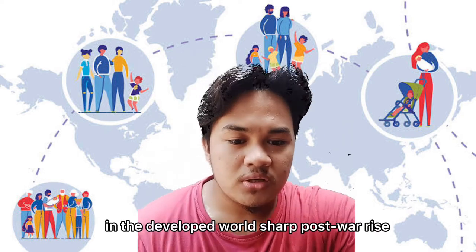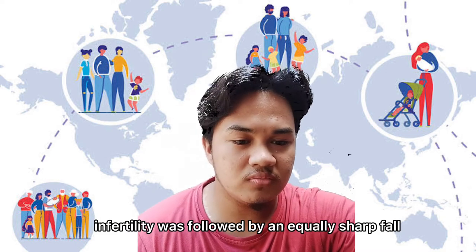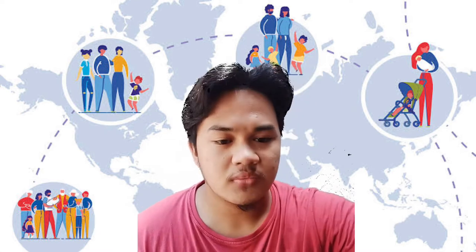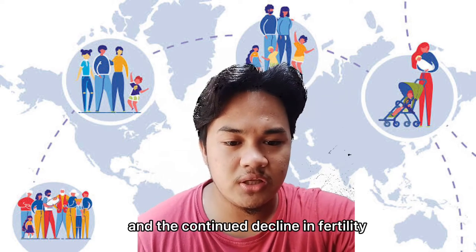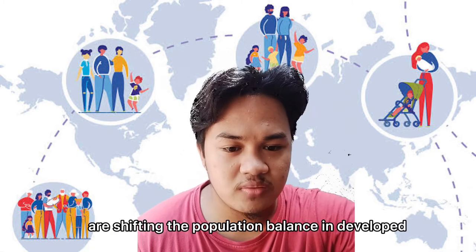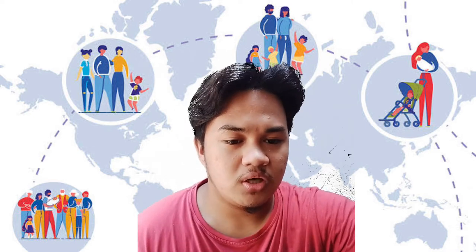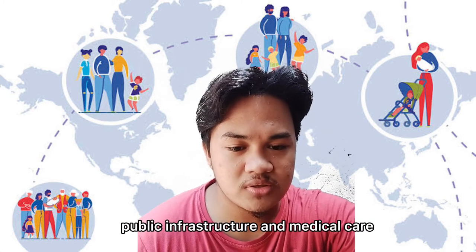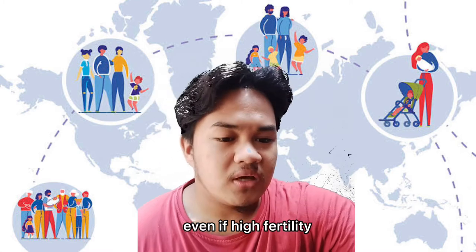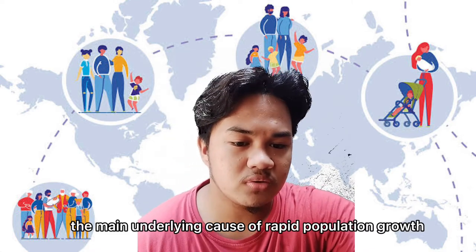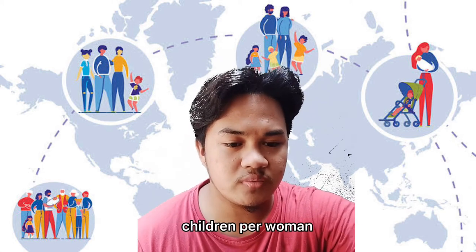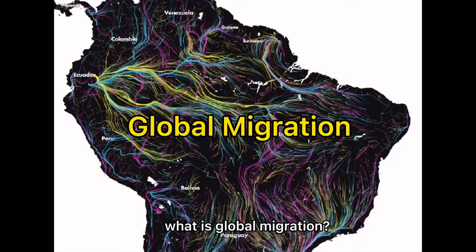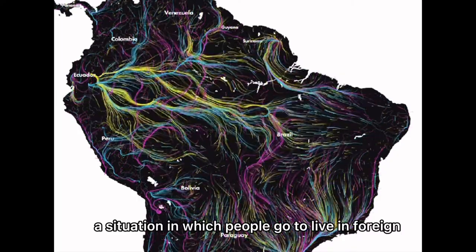In the developed world, a sharp post-war rise in fertility was followed by an equally sharp decline. This change in fertility transformed age structure and brought about the baby boom generation. The aging of this generation, continued decline in fertility, and shifting mortality patterns have shifted the population balance in developed countries from young to old. Meanwhile, the developing world experienced a population explosion resulting from improved nutrition, public health infrastructure, and medical care. Even if high fertility — the main cause of rapid population growth — were suddenly adjusted to the long-run replacement level of 2.1 children per woman, humanity would continue to experience demographic momentum for some time.